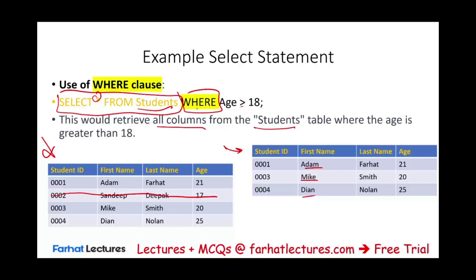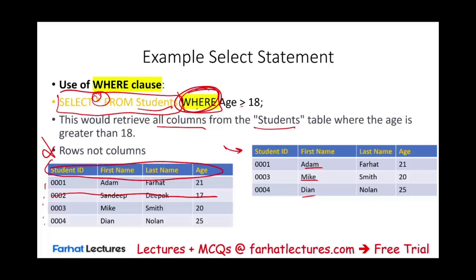Note that these lessons are intended for CPA candidates and accounting information system students, not programmers. When we use WHERE, it specifies which rows we want to select, while the star selects all columns. We can use any kind of condition in the WHERE clause to filter specific rows.